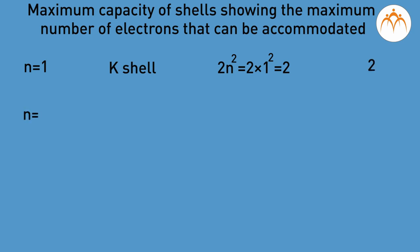For n = 2, that is L shell, the maximum number of electrons that can be accommodated is 2n² = 2 × 2² = 8. For n = 3, that is M shell,